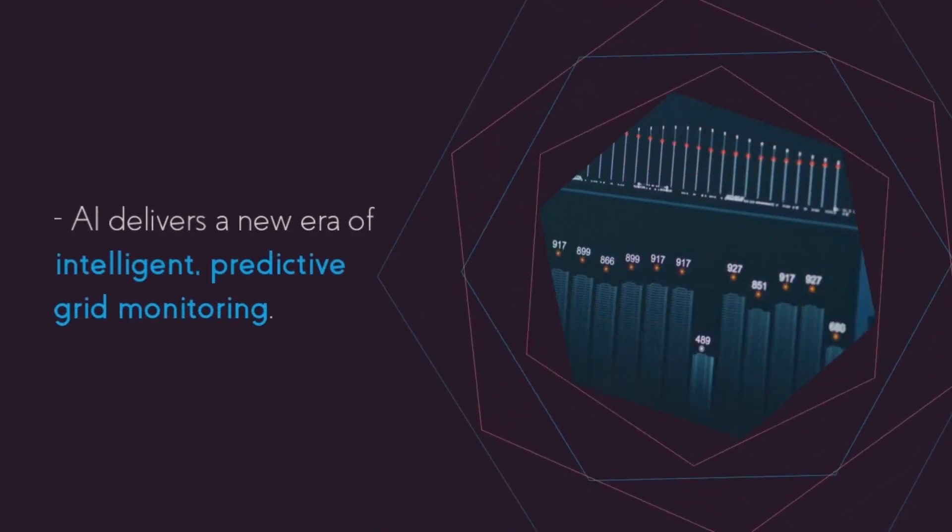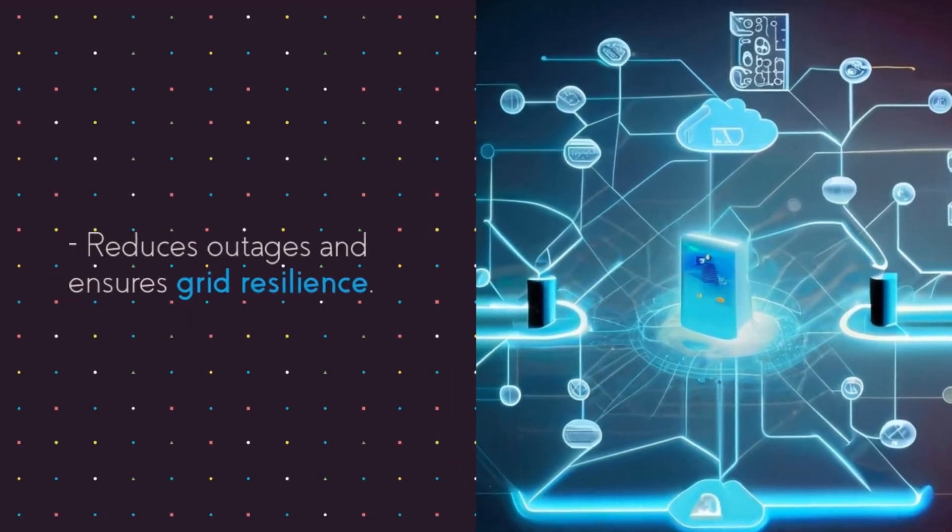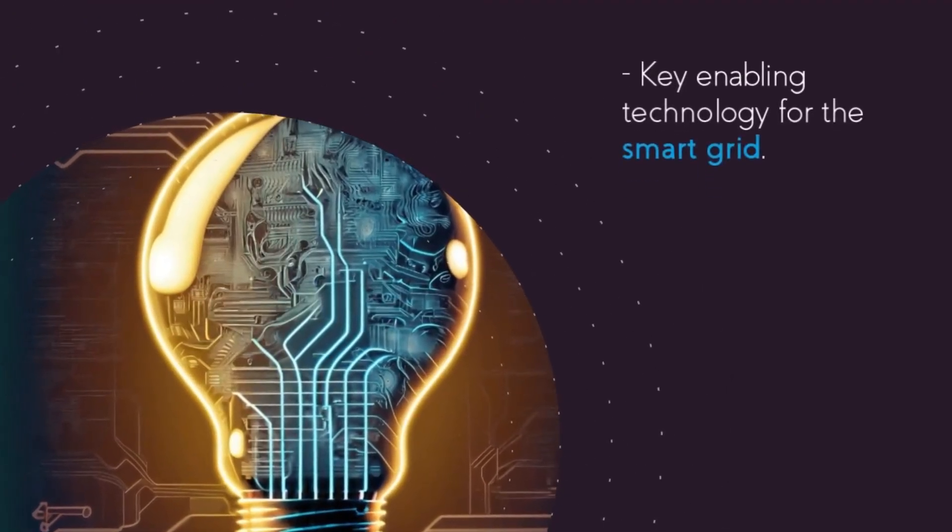In summary, AI gives us intelligent monitoring to predict and prevent problems. This reduces outages so the grid can operate smoothly. AI is a key technology for transforming our electrical infrastructure.